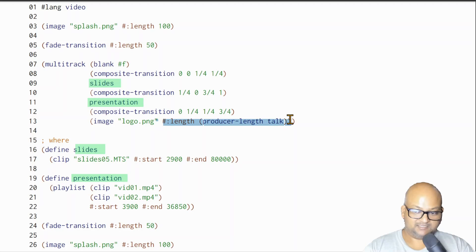One striking thing to notice is that we can define variables like slides and presentation, which we define over here. So slides is taken out of a clip of this video and we can specify the starting and ending frames that we want that clip to go over, and we do the same with presentation. Presentation shows us a new construct called playlist, which is the simple concatenation of these two clips. Once we're done with this multi-track video, we then again have a fade transition and we end with the splash screen.